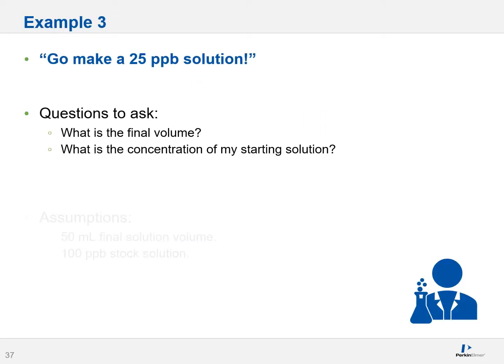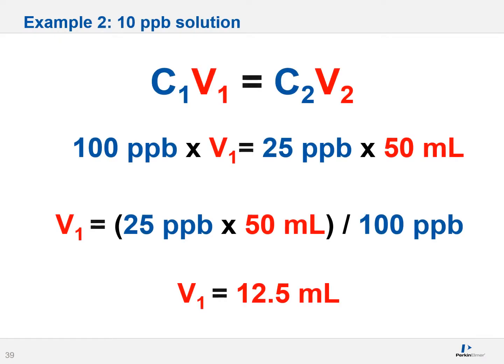Let's go through one final example. Let's say someone comes up to you and says, go make a 25 ppb solution. Well, the first question I would ask is, okay, you want me to make a 25 ppb solution, but what's your final volume? Do you want me to make 50 mls, 100 mls, a couple of liters? What are you looking for? And what is the concentration of my starting stock solution? Where am I starting my solution preparation? Let's make a few assumptions. Let's assume this person says, I need you to make a 50 ml final solution. And oh yeah, the only stock solution I have in house is 100 ppb. No biggie.